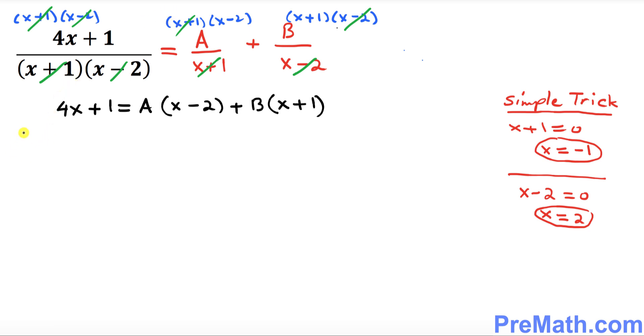So in order to find A value and B value, at x equal to negative 1, what happens if we plug it in over here? This becomes 4 times negative 1 plus 1. This is A times (negative 1 minus 2). And here, look at this: when you plug in x equal to negative 1, this negative 1 plus 1 makes 0. So this is B times 0.